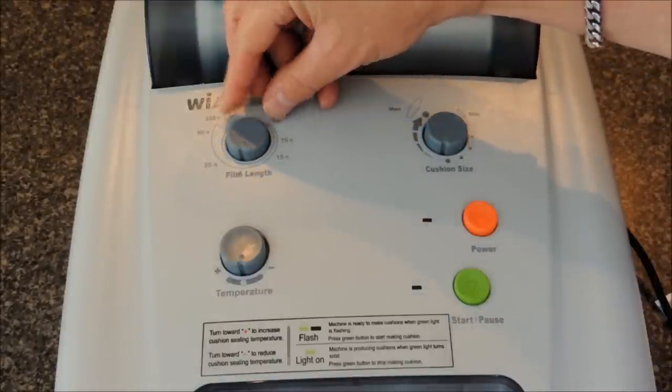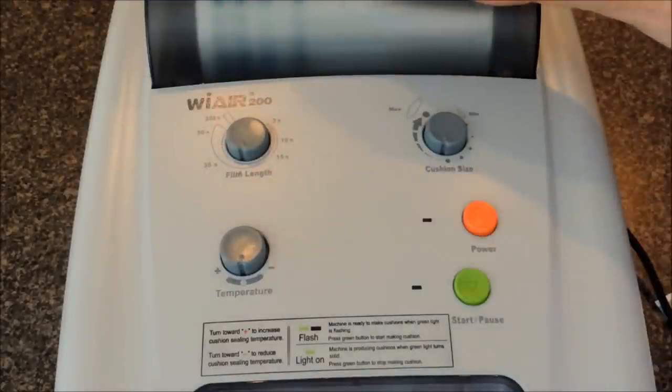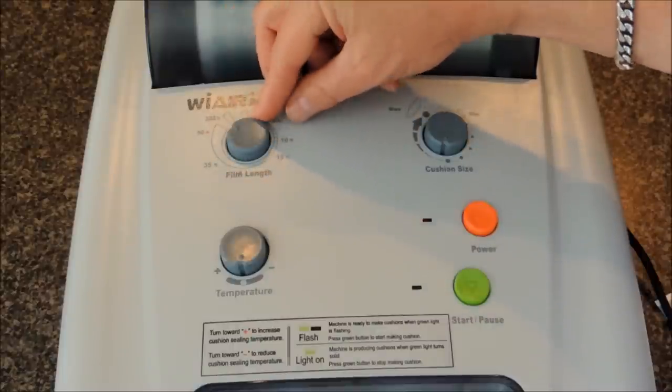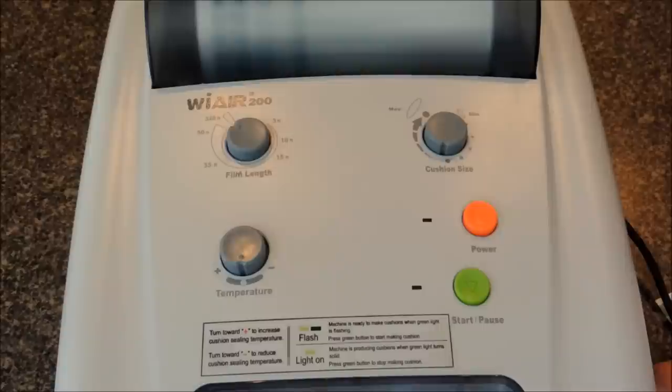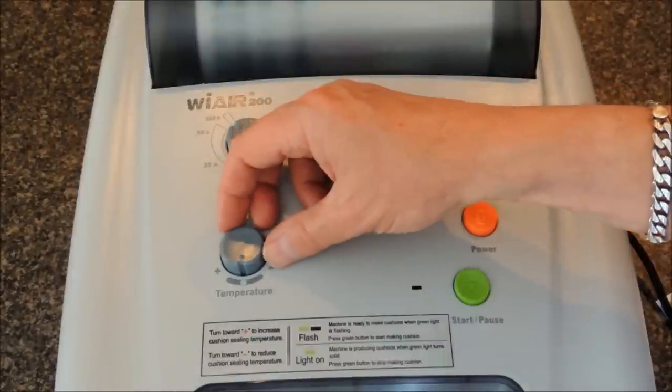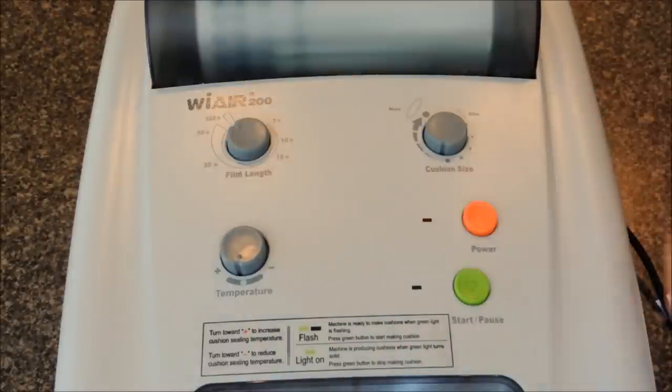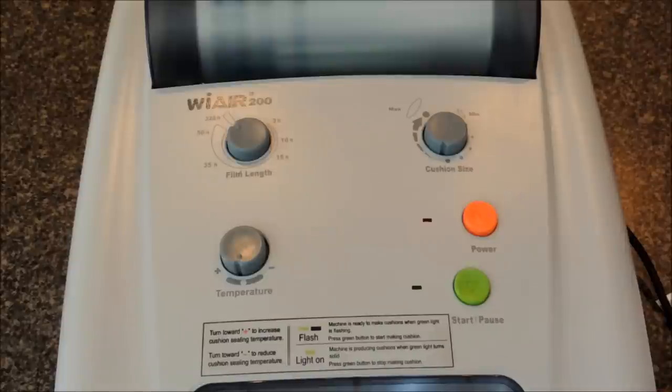On the left hand side is the film length selector from 3 feet all the way to a full roll of 328 feet. Sealing bar temperature control is the dial on the lower left hand side.